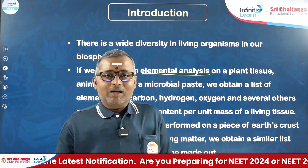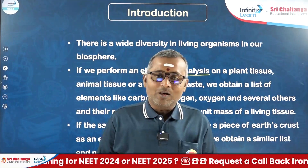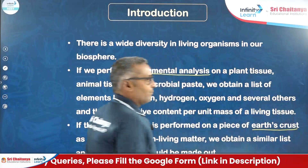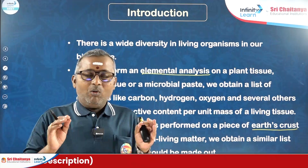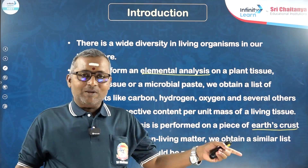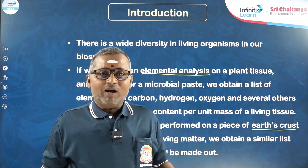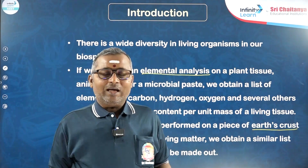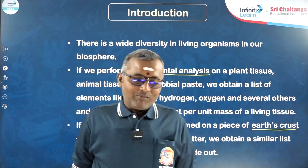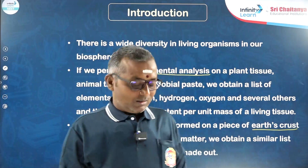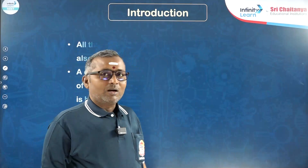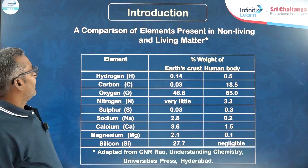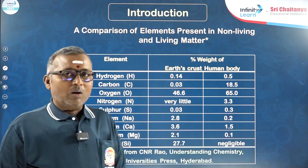If you do a similar kind of analysis by taking earth crust as an example for non-living things, you can find almost a similar kind of list of elements as observed in living organisms. That means we do not find any difference in the list of elements of non-living things as well as living things — exactly the same similar kind of elements. However, the relative abundance of carbon and hydrogen will be more in any living organism when compared to other elements.